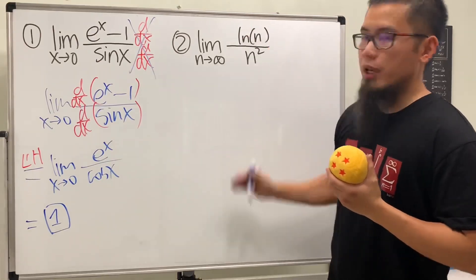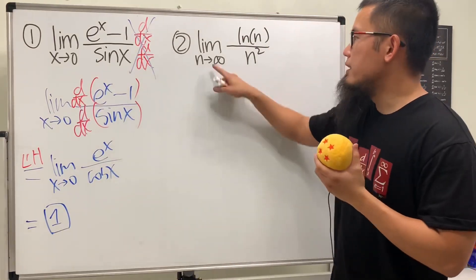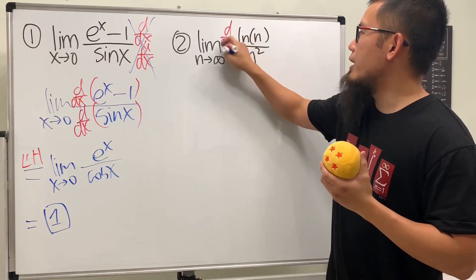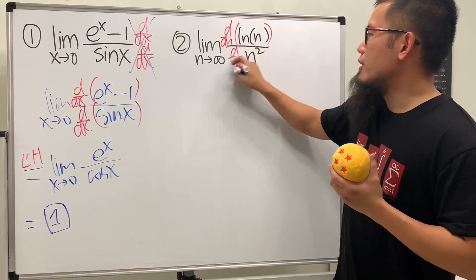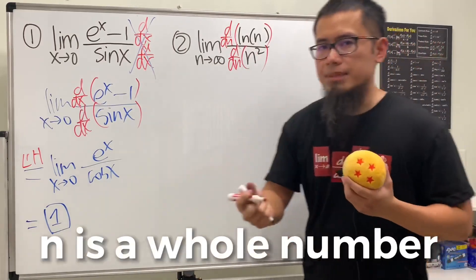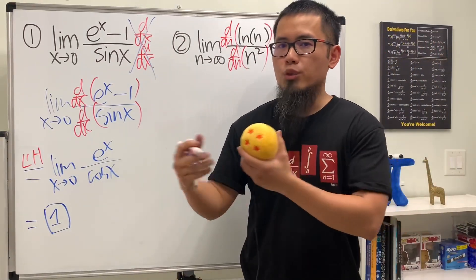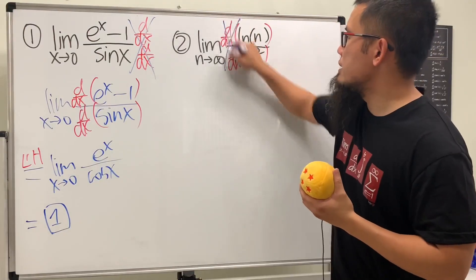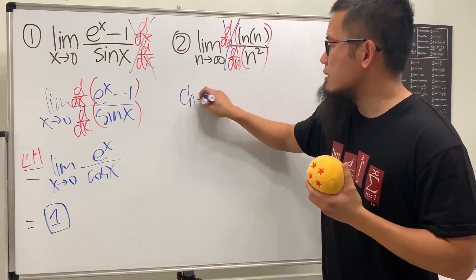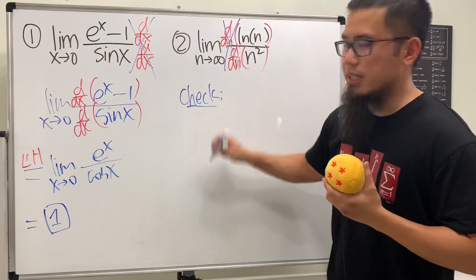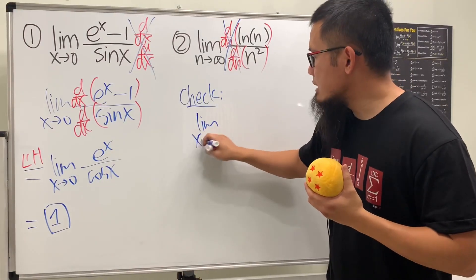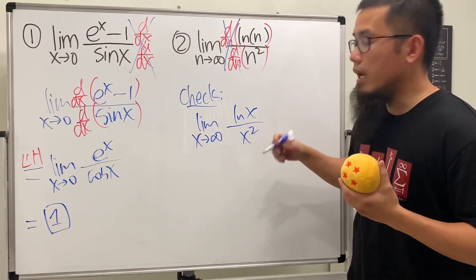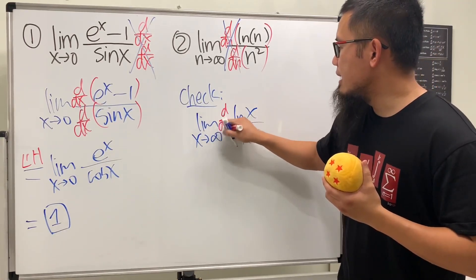After this, remember to put the d/dx in the front. But if this is n goes to whatever — do not put down d/dx, because n is meant to be a whole number since we're doing sequences and series. Please don't do this. What you should be doing instead is checking the function version, namely the limit as x goes to infinity.